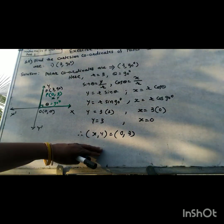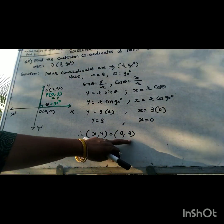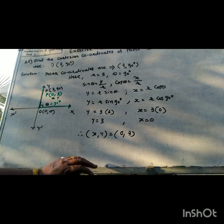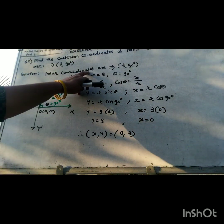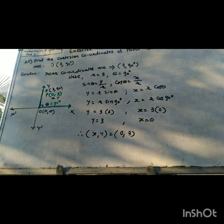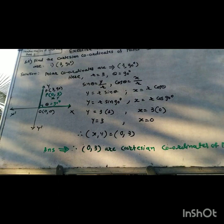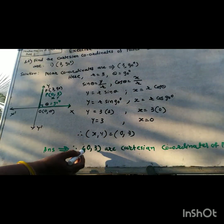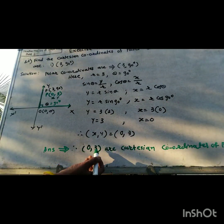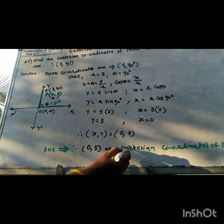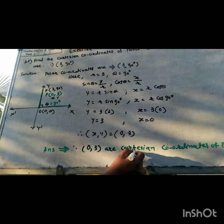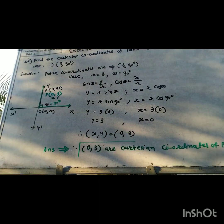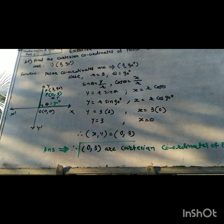In the Cartesian coordinate system we write coordinates as (x, y), while in polar coordinates we write radius and angle. Therefore the final answer is (0, 3) — these are the Cartesian coordinates of point P.